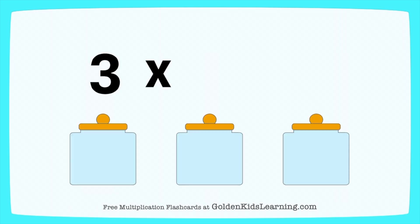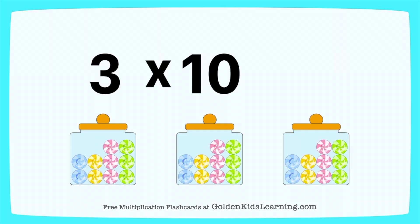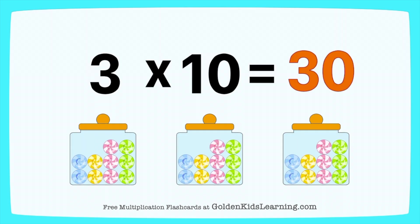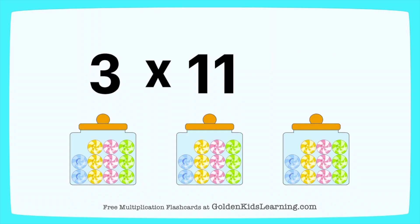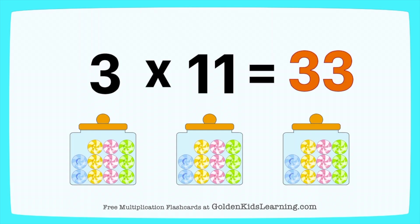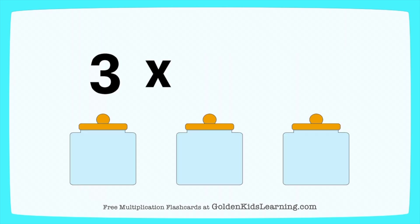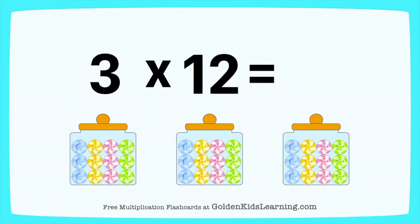3 times 10 equals 30. 3 times 11 equals 33. 3 times 12 equals 36.